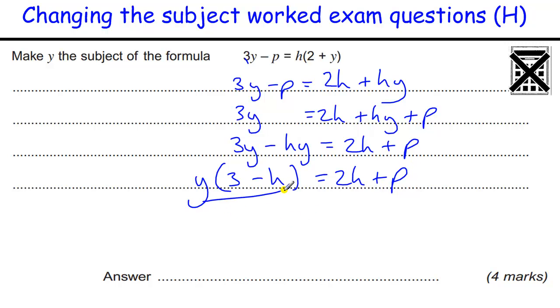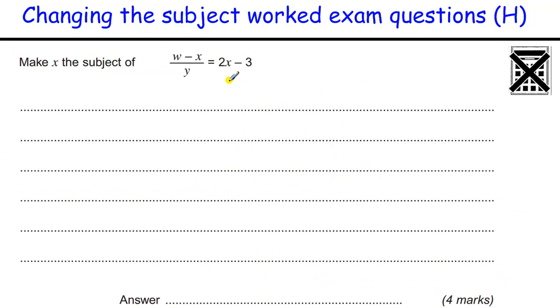And then I can just divide by 3 minus H. I don't actually need a bracket there, because there's one implied with that division line, so Y equals 2H plus P over 3 minus H. OK, that's a very common idea, you end up having to divide the bracket over the other side.